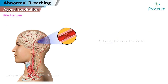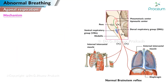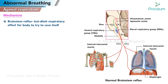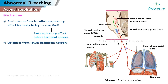Mechanism of agonal breathing: Agonal breathing can be caused by anything that cuts off the blood supply to the brain. The brain gets oxygen from the cells in blood. Agonal respiration is thought to be a brainstem reflex providing a last-ditch respiratory effort for the body to try to save itself — the last respiratory effort before terminal apnea. Agonal breaths are thought to originate from lower brainstem neurons as higher centers become increasingly hypoxic during cardiac arrest.